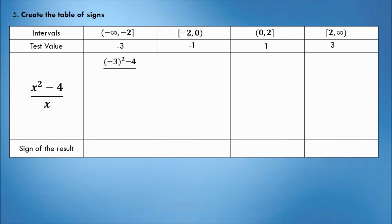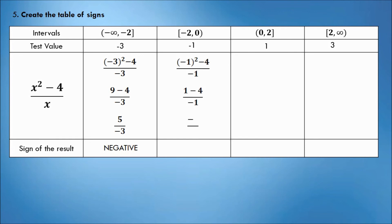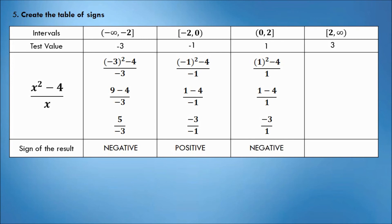Substituting negative 3 gives 5 over negative 3 — positive over negative is negative. Substituting negative 1 gives negative 3 over negative 1 — negative over negative is positive. Substituting positive 1 gives negative 3 over positive 1 — negative over positive is negative. Lastly, substituting positive 3 gives positive 5 over positive 3 — positive over positive is positive.